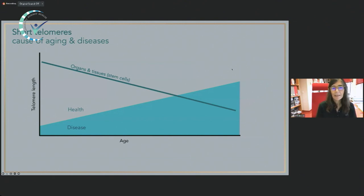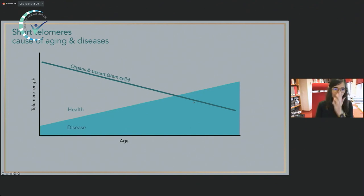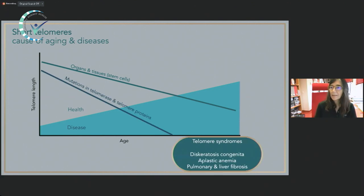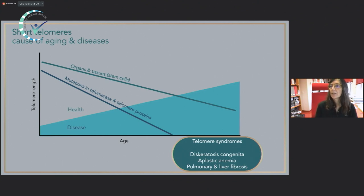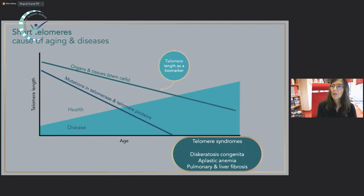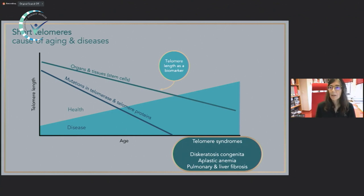Telomere length decreases with aging, and when telomeres reach a critically short length, this is one of the causes of molecular aging and one of the reasons our organism loses the ability to regenerate tissues, leading to disease and ultimately limiting lifespan. A proof of that is that there are diseases called telomere syndromes — individuals with mutations in telomerase and other proteins important for telomere maintenance. Even in normal wild-type individuals, short telomeres increase the risk of diseases of aging and are considered a biomarker of molecular aging with prognostic value.